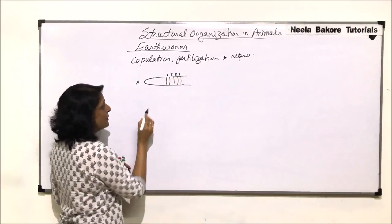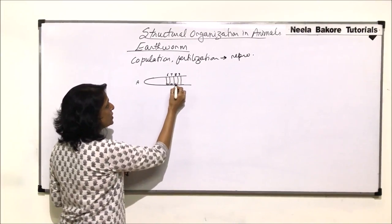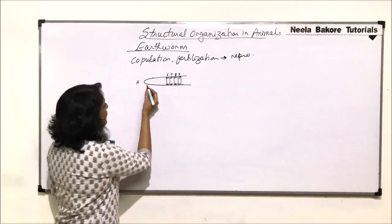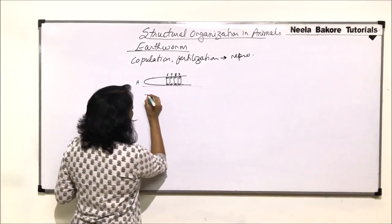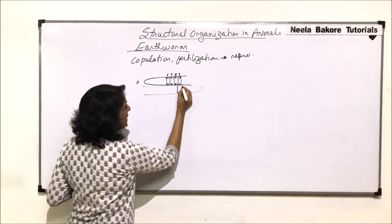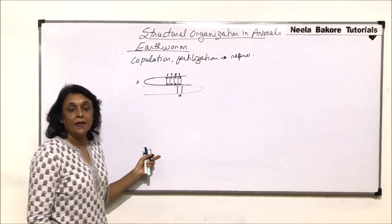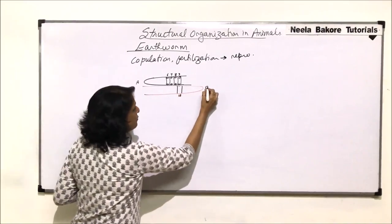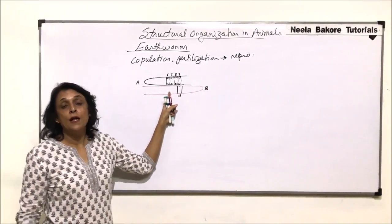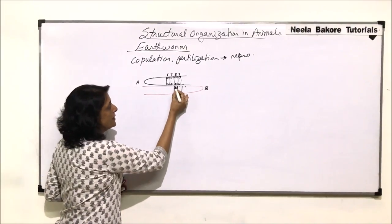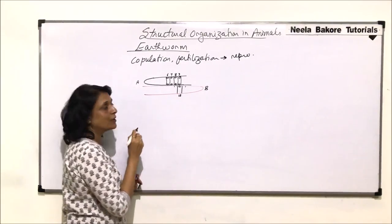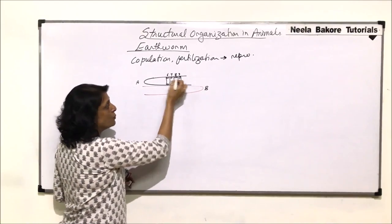This is worm A. We have drawn the segments — the spermathecal pores are in segments 5 and 6, so here are the openings of the spermatheca. The other worm aligns such that its anterior end is on this side and its 18th segment coincides with the spermatheca. This is worm B. Worm B holds worm A with the help of the copulatory papillae, which are present in the 17th and 19th segments.